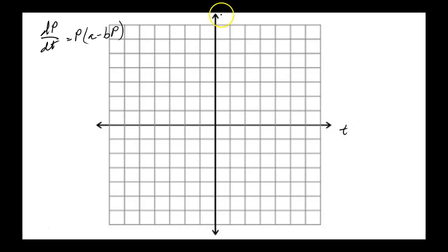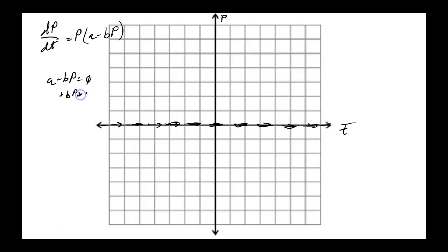Here t is the independent variable and p is the dependent variable. The slope is always 0 along p equals 0 — that's an equilibrium point. The slope is also 0 where a minus bp equals 0. Adding bp to both sides gives a equals bp, so dividing by b: p equals a/b.